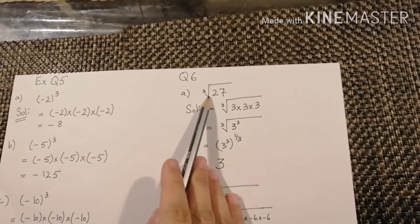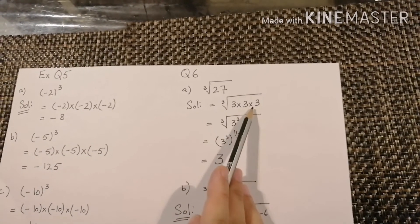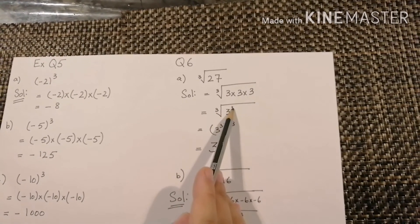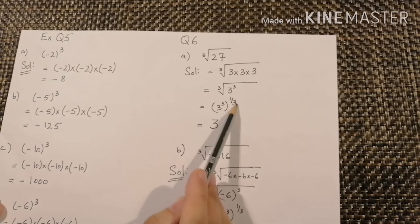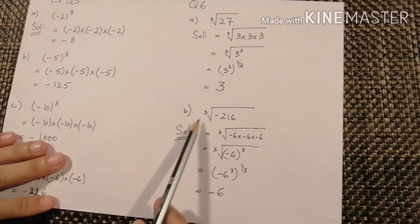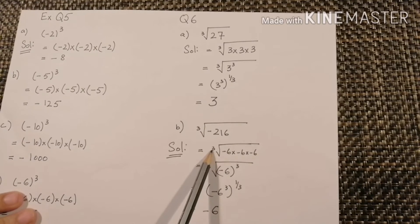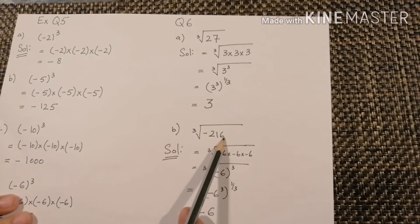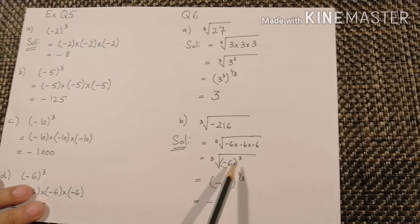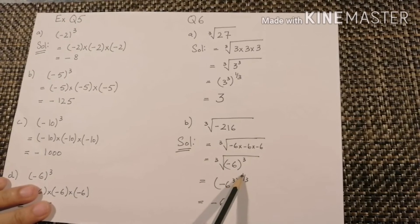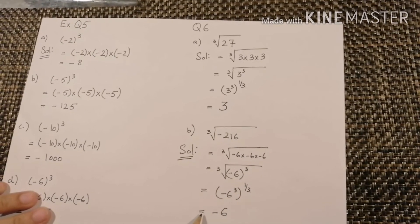Question number 6. Part A: cube root of 27. Cube root of 27 is 3 multiplied by 3 multiplied by 3, so powers are added to give 3 power 3. Removing the cube root sign gives 3 power 3 with whole power 1 by 3, which cancels out and we get 3. Part B: cube root of minus 216. Minus 216 is minus 6 multiplied by minus 6 multiplied by minus 6, giving minus 6 power 3. With whole power 1 by 3, as we remove the cube root sign, these cancel out and the answer is minus 6.